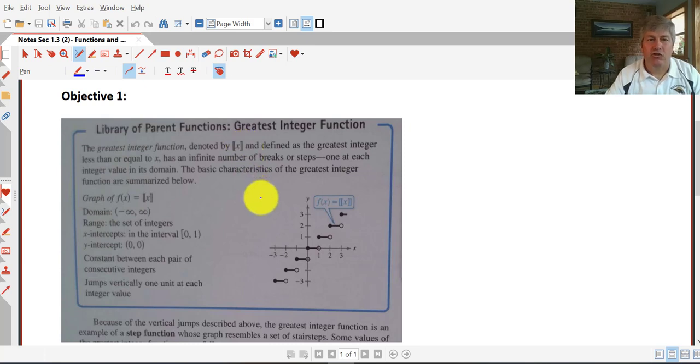In the greatest integer function, as you can see in the graph, our solutions are just integers. We're used to having solutions or outputs be a smooth line or continuous line. But here, our range is just the set of integers.